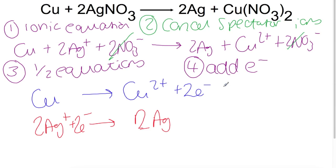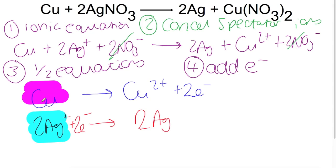Finally, we want to find our oxidising and reducing agents. The oxidising agent is the one which gets reduced — so that is the silver ions. The reducing agent is the one that gets oxidised — so that is the copper metal.